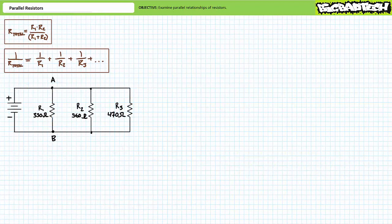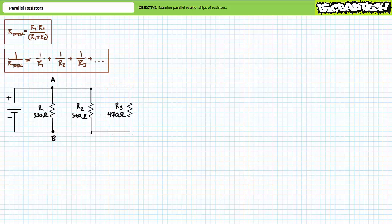Let's modify this existing parallel relationship by including a third resistor R3 having a value of 470 ohms in parallel. How will the addition of this third path affect the total resistance seen by the source? Think about it — will resistance go up, go down, or remain the same now that there's another path for current? If you're tracking, you should realize the total resistance should be less than the previous two-resistor configuration because yet another path for current exists. Let's see if our calculations match our expectations.